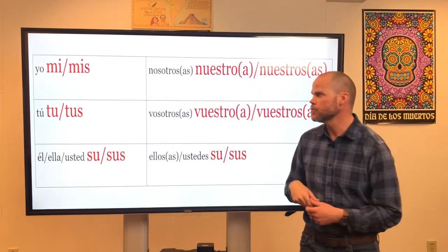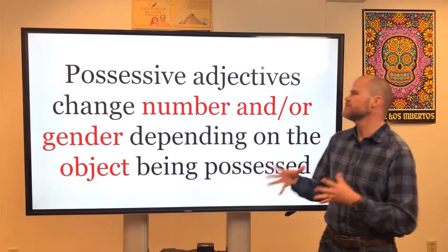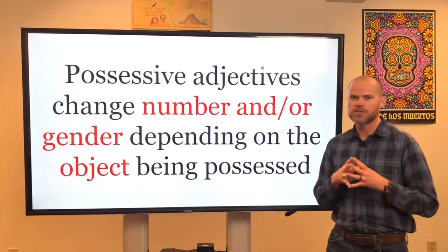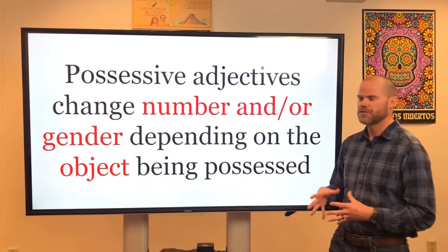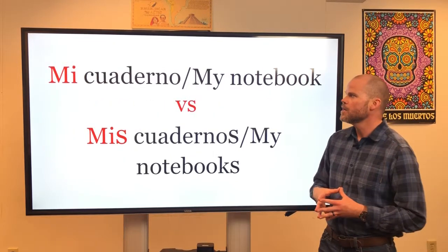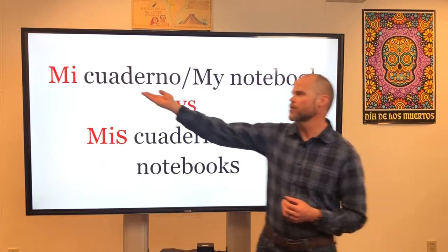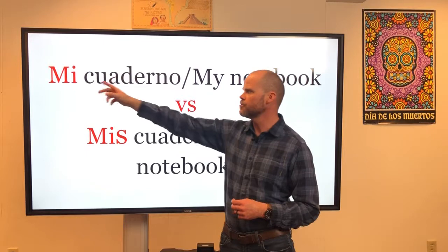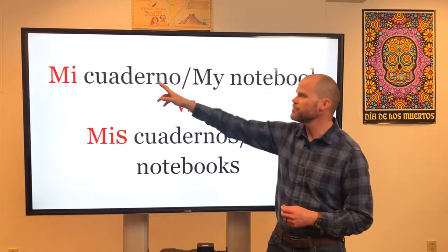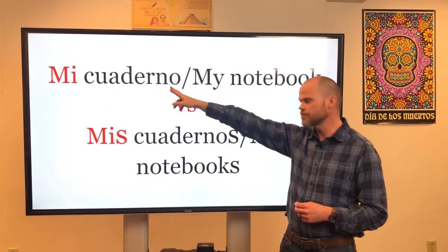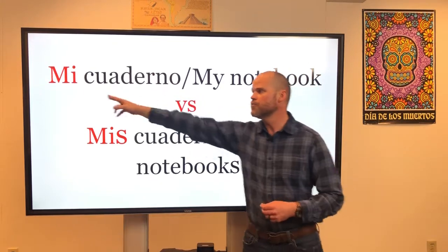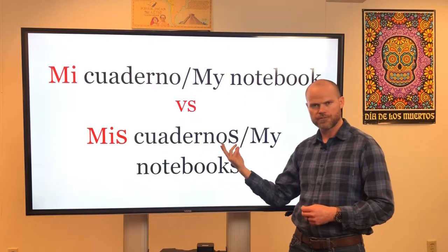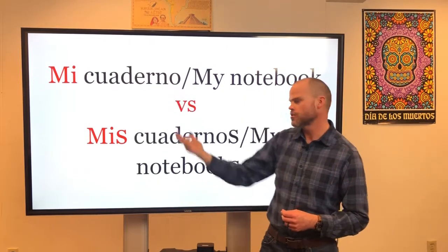So let's take a look at some examples. Let me re-emphasize that possessive adjectives change number and/or gender depending on the object being possessed. So I have mi cuaderno — that means "my notebook." I only have one notebook, so it's just mi cuaderno. What happens if I change mi cuaderno to plural? What happens if I have more than one notebook?